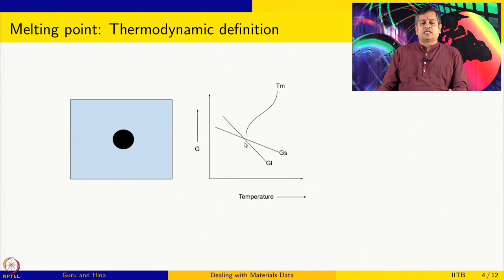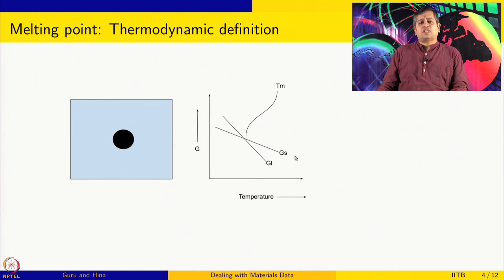In every case, the driving force for transformation is given by free energy changes — the system tries to minimize its free energy. When heating, the solid turns into a melt; when cooling, the liquid turns into a solid. However, at the melting temperature there is no driving force for transformation at all, because the two free energies are equal.